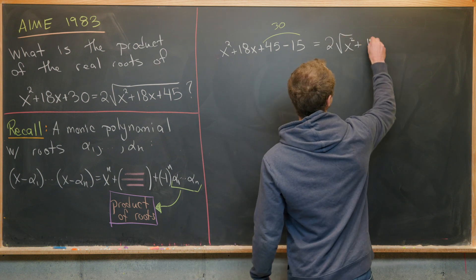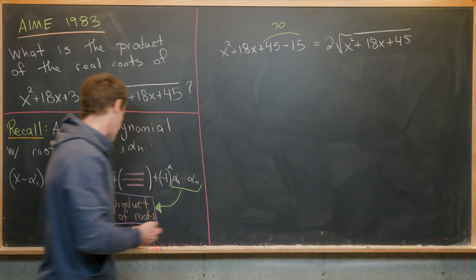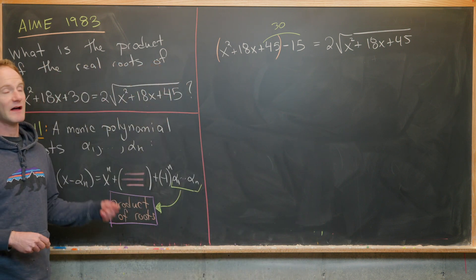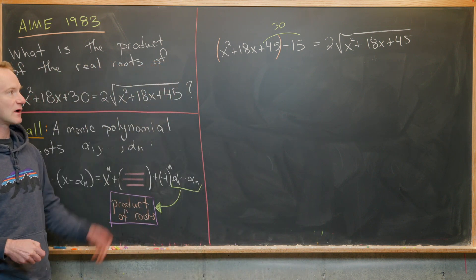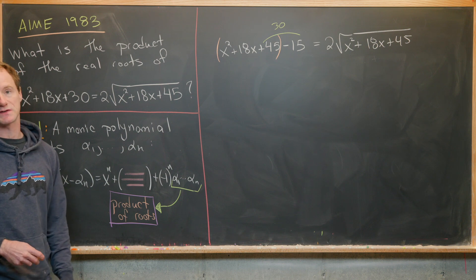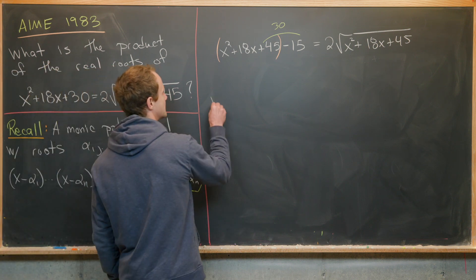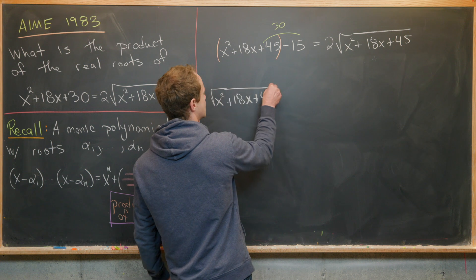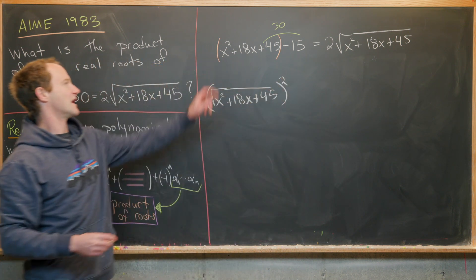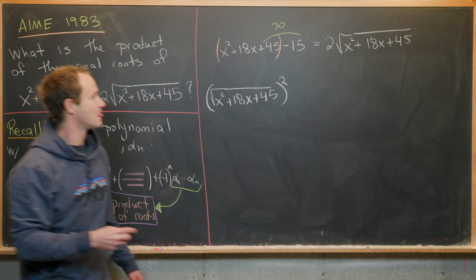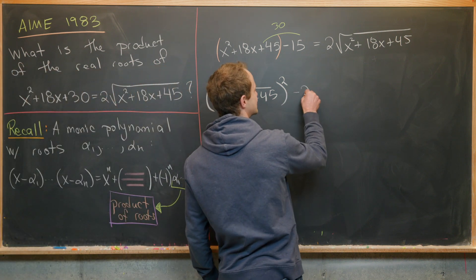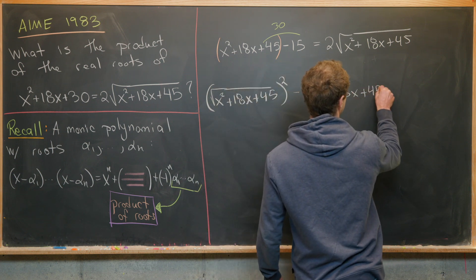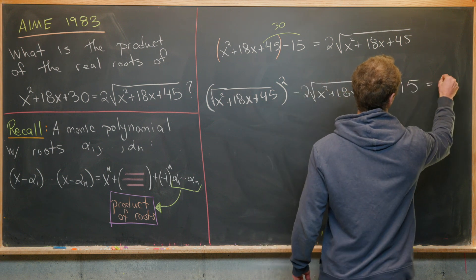Next, we can group the x² + 18x + 45 on the left hand side and rewrite it as (√(x² + 18x + 45))². So we've got (√(x² + 18x + 45))² - 2√(x² + 18x + 45) - 15 = 0.